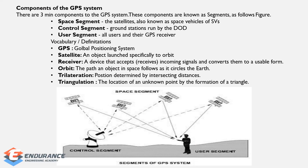The components of the GPS system include three main components: the Space Segment (satellite), the Control Segment (ground station run by the DOD), and the User Segment. Key definitions: GPS satellite is an object launched specifically to orbit; a receiver is a device that accepts signals from orbit; orbit is the path an object in space follows as it circles; position is determined by intersecting distances; triangulation is the location of an unknown point by the formation of a triangle.